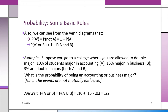Let's look at an example with numbers. At a college that allows double majors: 10% of students major in accounting (A), 15% major in business (B), and 3% are double majors in both. What's the probability of being an accounting or business major? You can't simply add 10% and 15% — you'd be double counting those students who appear on both lists. Using the formula: P(A or B) = P(A) + P(B) − P(A and B) = 0.10 + 0.15 − 0.03 = 0.22.